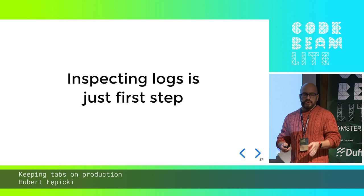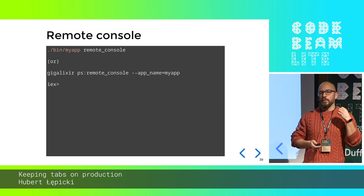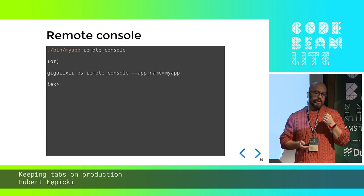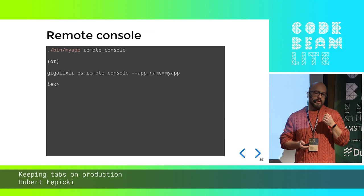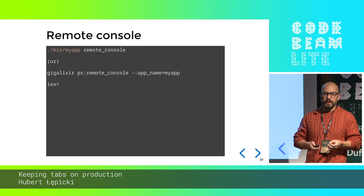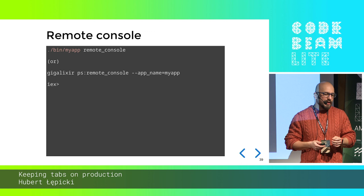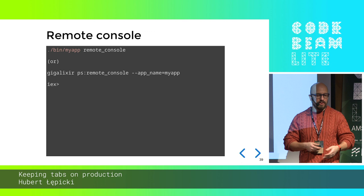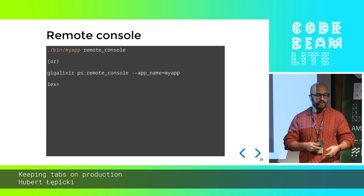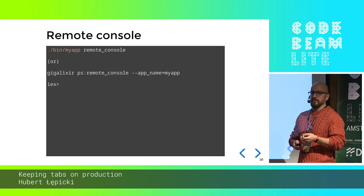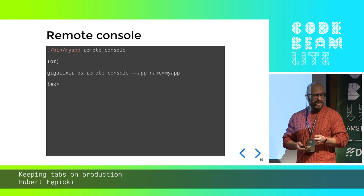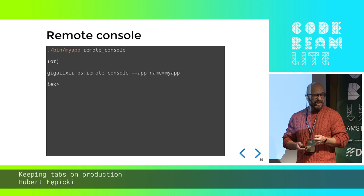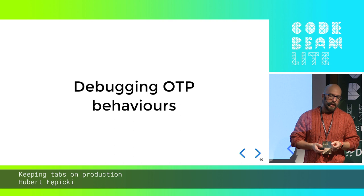Often inspecting logs is just the first step and you have to go deeper, poking around production. We have a remote console, which is a very awesome tool you can use if you're using releases. If you're still running your Elixir application using Mix, don't — just use releases, so you can connect to your application using a remote console, poke around the live running system, collect information, and figure out what's going on. Elixir 1.9 ships with releases built-in, so we don't need to rely on Distillery.